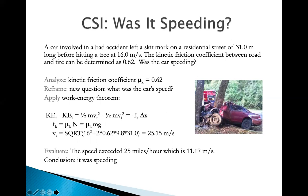So if we solve the equation, the initial velocity is 25.15 meters per second. We evaluate that this is larger than 11.17 meters per second for a residential area speed limit. This car was speeding.